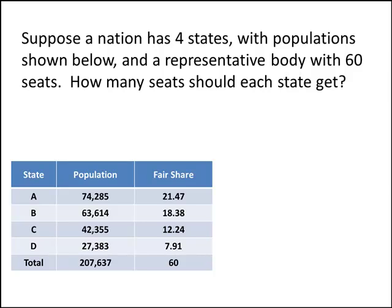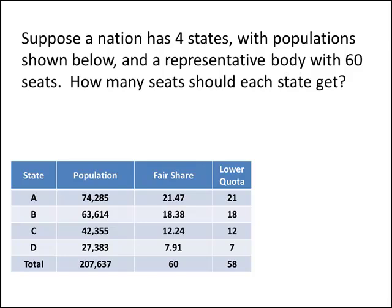First, we need to round the fair shares down — those numbers give us the lower quota. So 21.47 becomes 21, 18.38 becomes 18, and so on. Essentially, just chop off the decimal part and look at the whole number in front of the decimal.